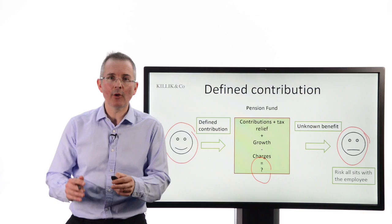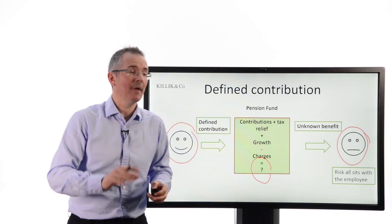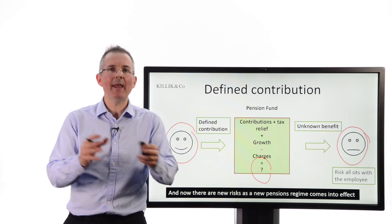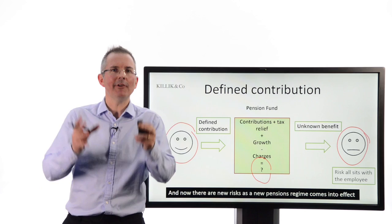So hence the question mark. That could be worth anything. No risk for the employer. They just keep shoveling in the three or four or five percent, whatever it is, of your income while you're an employee. All the risks, it's over there. As if that wasn't bad enough, there are now other risks lurking around. Because a new pensions regime has come in, introduced by Chancellor George Osborne.